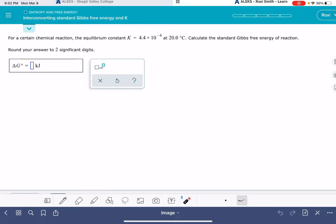In this video, I'm going to show you how to solve the ALEKS problem called interconverting standard Gibbs free energy and K. The equation that you're going to use to solve this problem is delta G standard equals negative RT times the natural log of K.